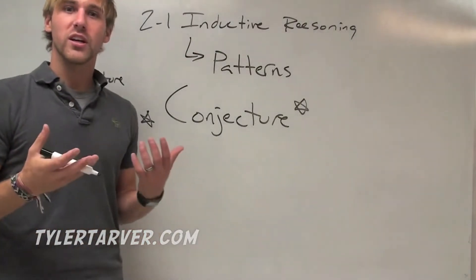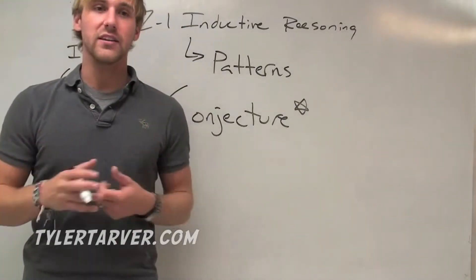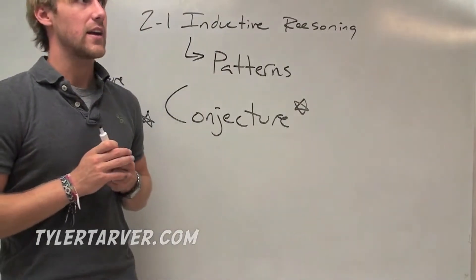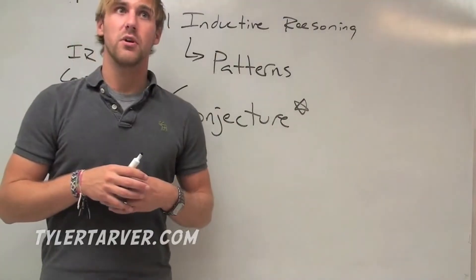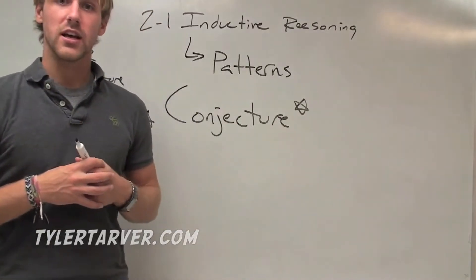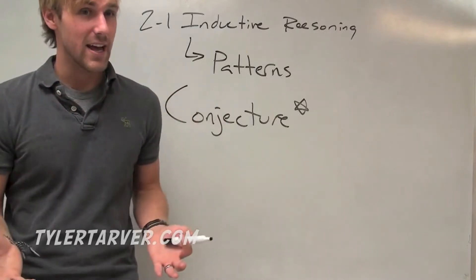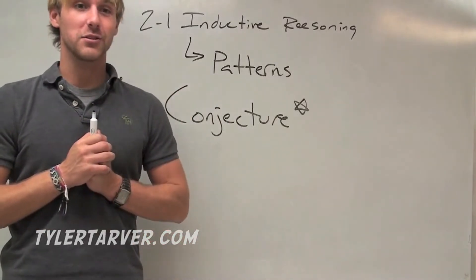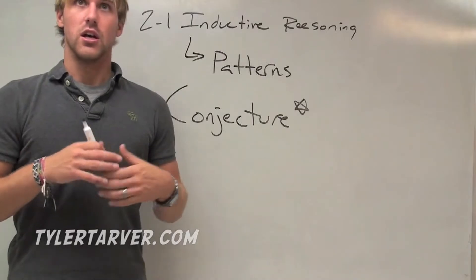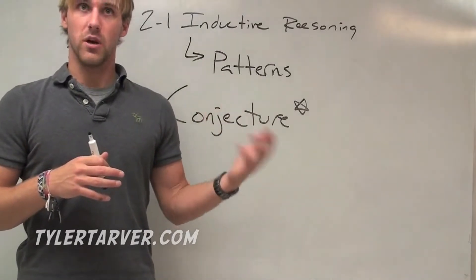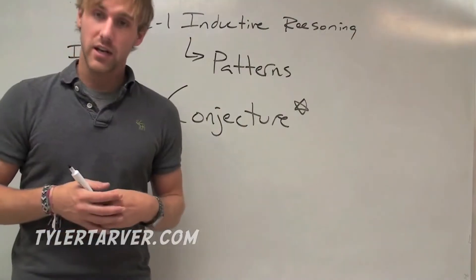A conjecture is pretty much a statement you believe to be true. For example, if yesterday was Monday and today is Tuesday, I could look at the pattern and say tomorrow's probably going to be Wednesday. That's using inductive reasoning to notice a pattern. The fact that I say tomorrow will be Wednesday — that is my conjecture.